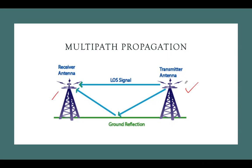In wireless communication systems, we have a transmitter and a receiver. When the transmitter transmits a signal to the receiver and they are in line and very close to each other, the signal reaches the receiver directly. This kind of signal is called a line-of-sight signal, and this kind of propagation is called line-of-sight propagation.